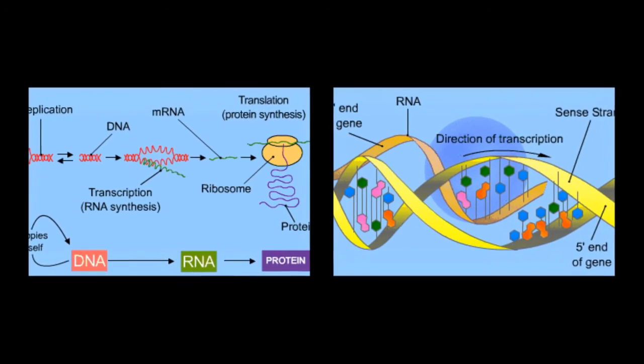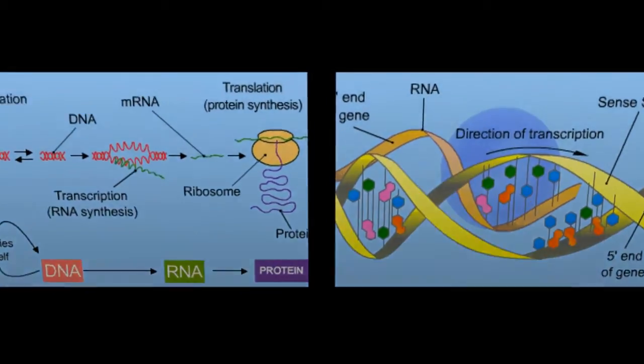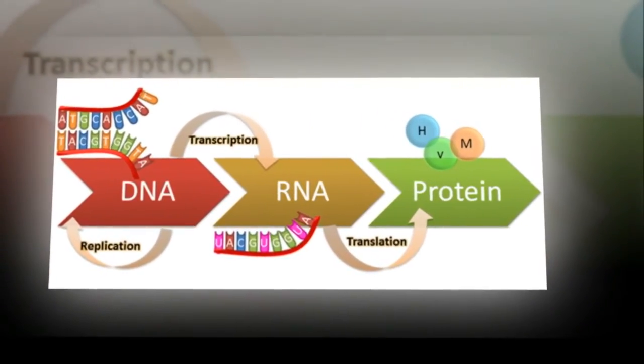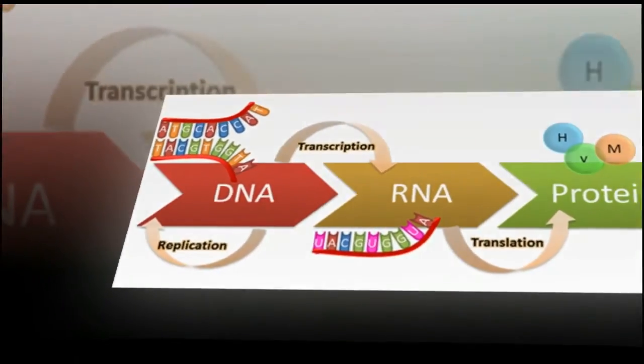Eukaryotic cells, however, first transcribe the DNA into heterophyll nuclear RNA. This RNA is created when the polymer section is capped with 7-methylguanosine and a polyethyl. The cell then converts RNA into mRNA.